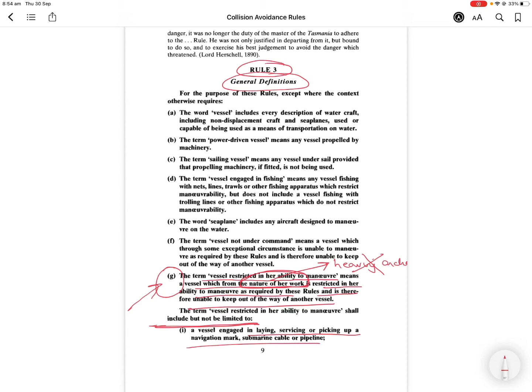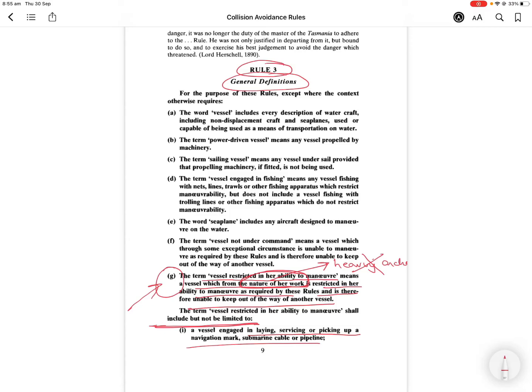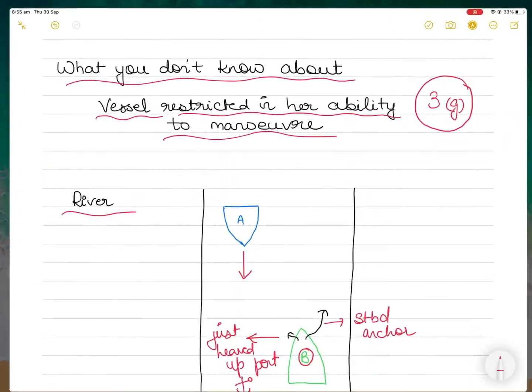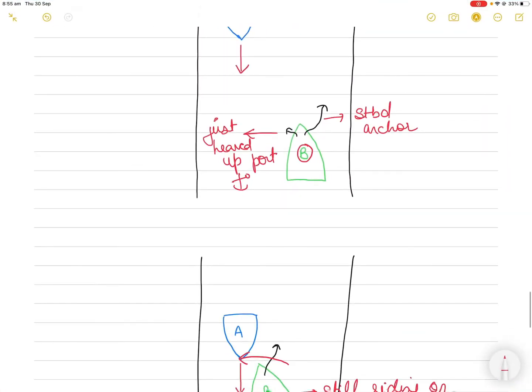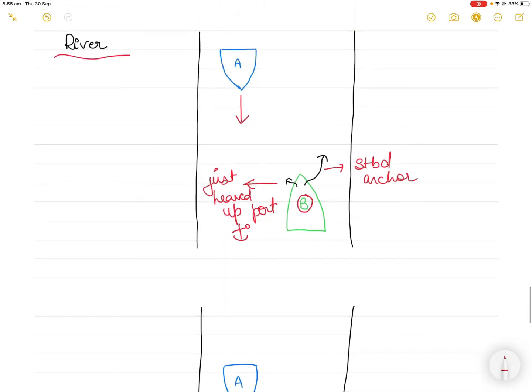So the court said that they will generally be very reluctant—they will not be interested to indulge in their own judicial innovation of collision regulations, which means that they cannot allow a vessel riding to her anchor or a vessel heaving of anchor to be considered as a vessel restricted in ability to maneuver. So in this case, vessel B was found to be at fault.